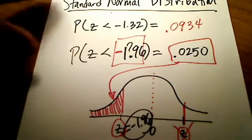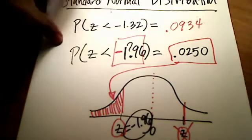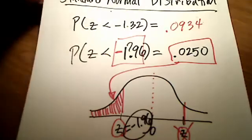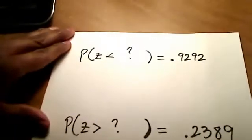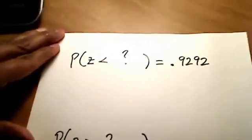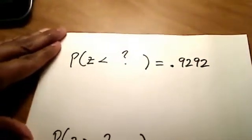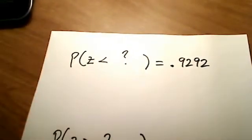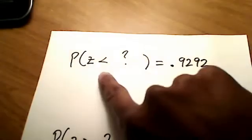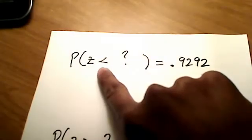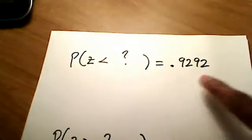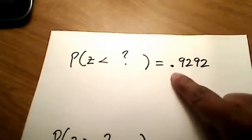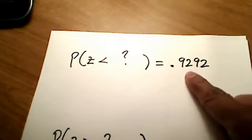Alright, let's try some other problems like this one. I've got three more and then we'll call it quits in this video. Take a look at this first one here. Notice that this is a less than symbol, so I'm shading to the left. And I'm trying to find a z-score corresponding to an area of 0.9292.